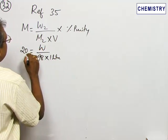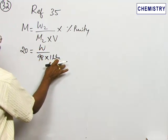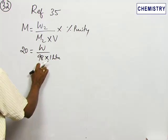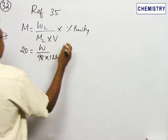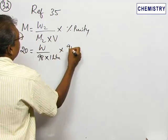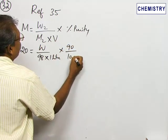For molarity calculation, we have to take the volume in liter and molar mass should be in gram per mole. W should be in gram and the percentage purity is given as it is, 90 out of 100.